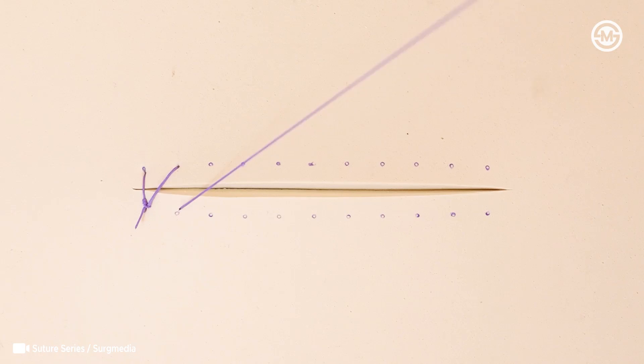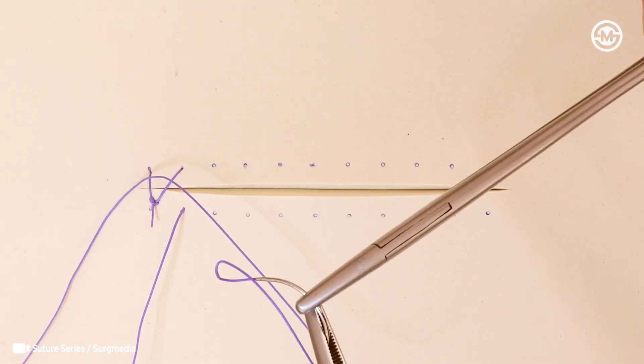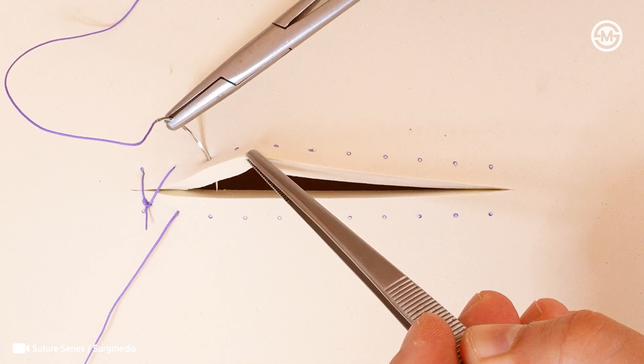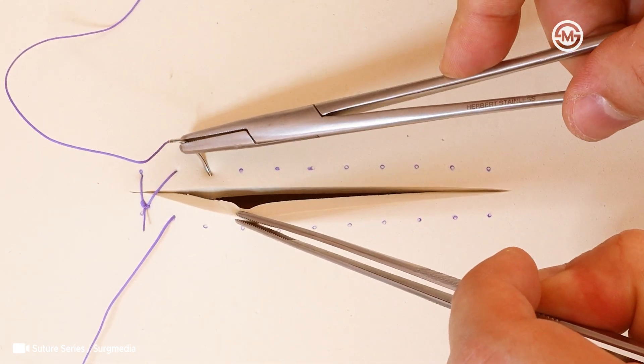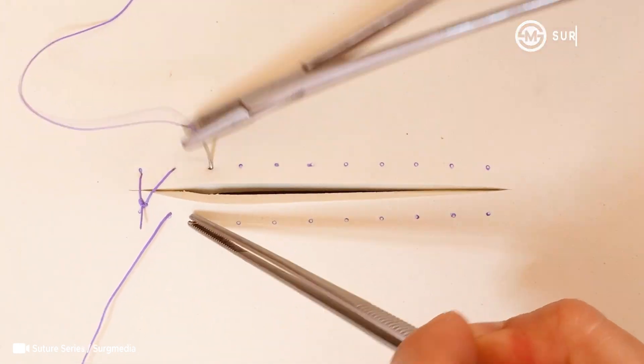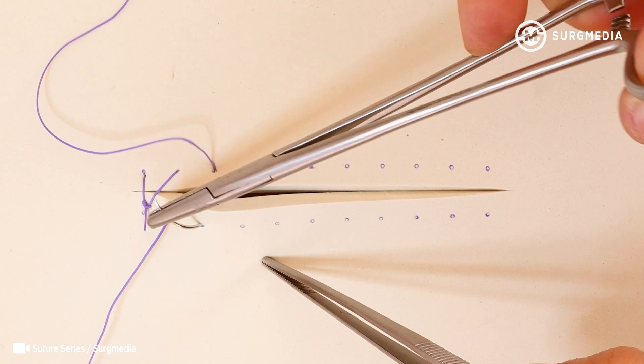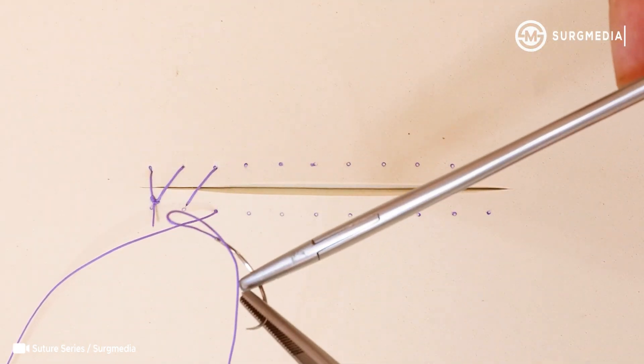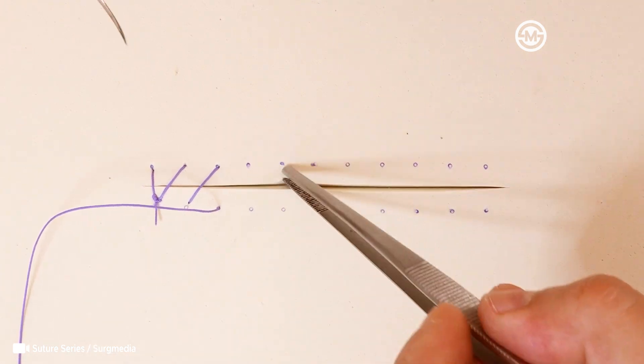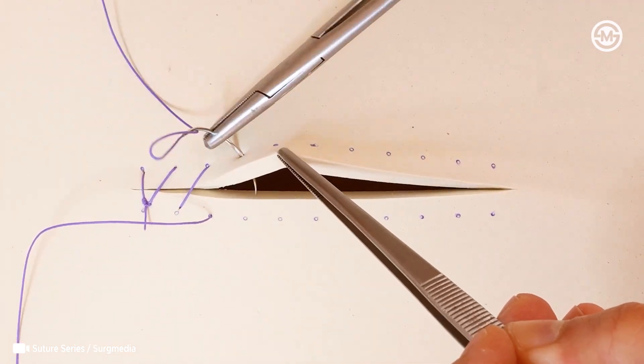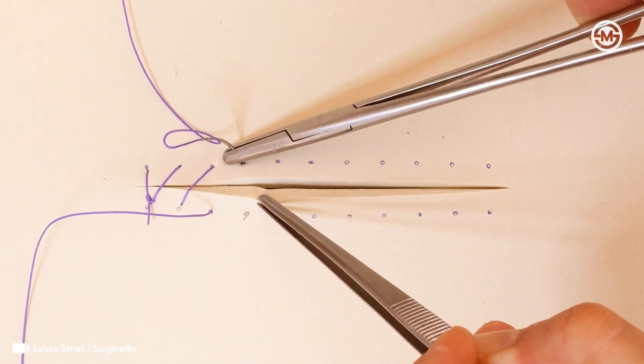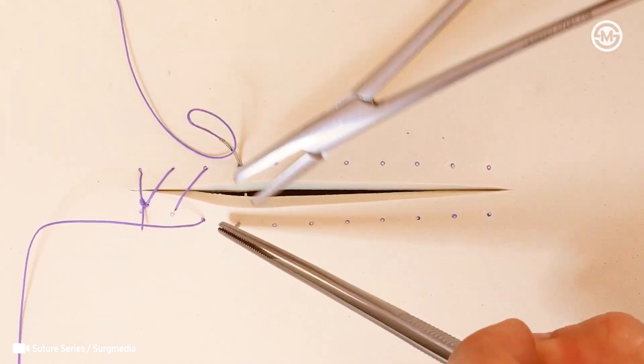To start, we place the first stitch and tie a square knot to anchor it. Then we trim off the extra thread. From there, we move down the wound, placing evenly spaced sutures without tying knots in between. To finish the suture line, we can tie the final knot directly to the last loop, or cross to the other side, similar to the vertical mattress technique. It's quick, it's clean, and it looks neat when done well.